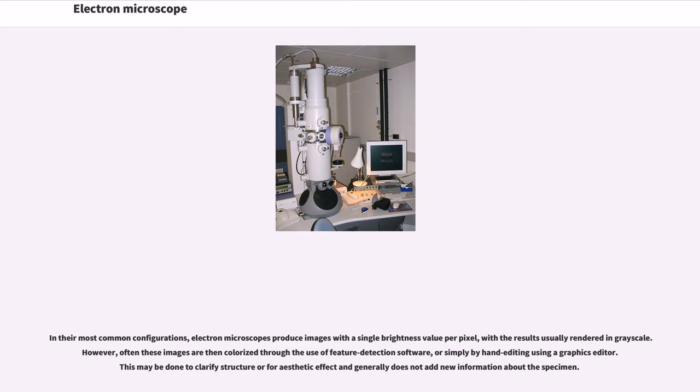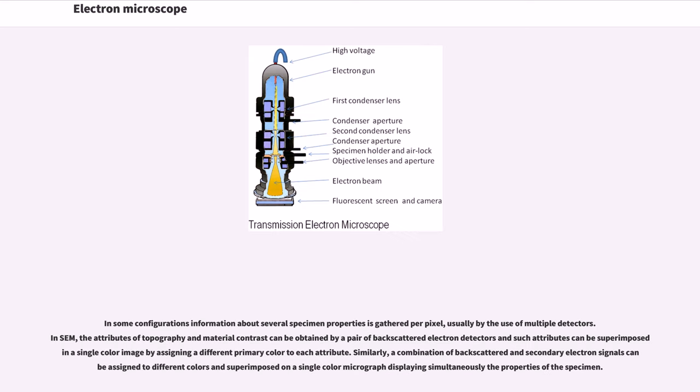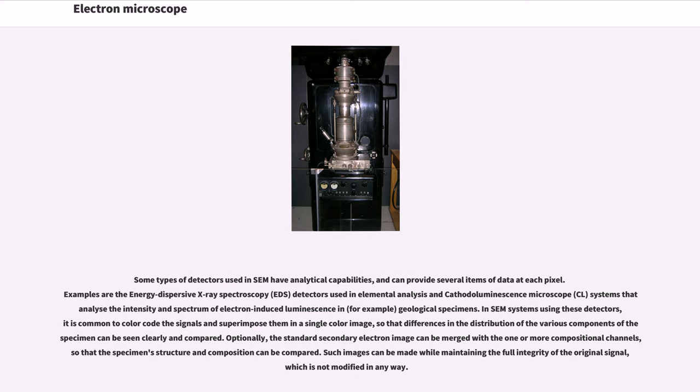This may be done to clarify structure or for aesthetic effect and generally does not add new information about the specimen. In some configurations information about several specimen properties is gathered per pixel, usually by the use of multiple detectors. In SEM, the attributes of topography and material contrast can be obtained by a pair of backscattered electron detectors and such attributes can be superimposed in a single color image by assigning a different primary color to each attribute. Similarly, a combination of backscattered and secondary electron signals can be assigned to different colors and superimposed on a single color micrograph displaying simultaneously the properties of the specimen.